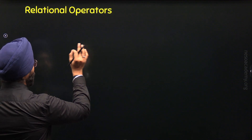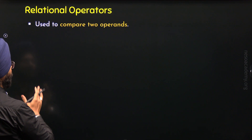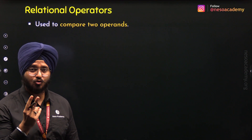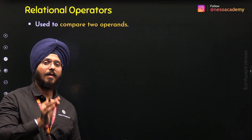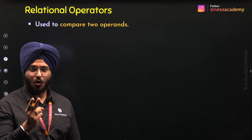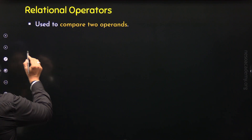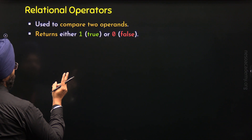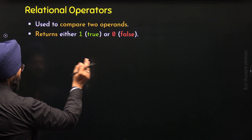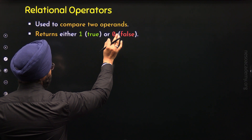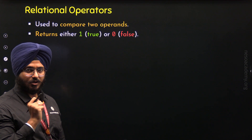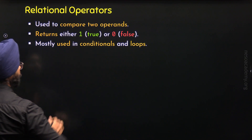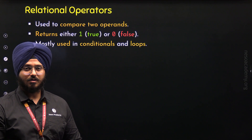A relational operator is the operator through which we can compare two operands. This means a relational operator is a binary operator — it can act on two operands. It returns either 1 or 0 as the result, where 1 represents true and 0 represents false. A relational operator is mostly used in conditionals and loops.